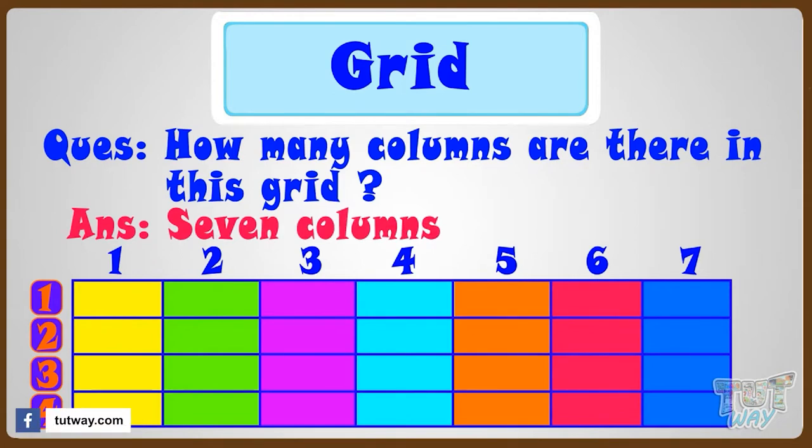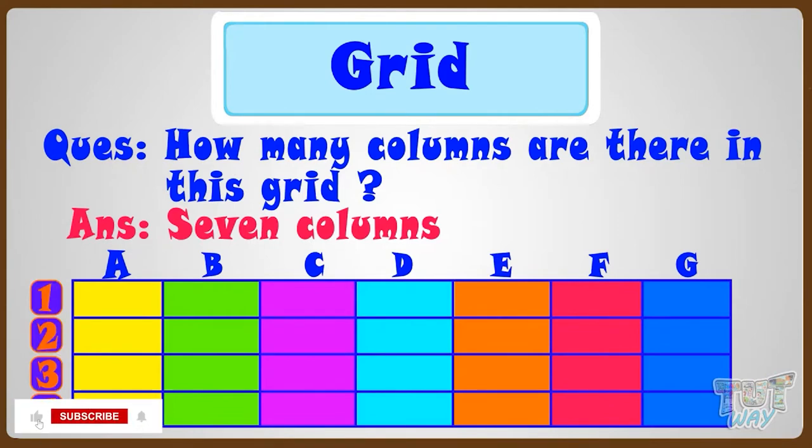Let's name the columns A, B, C, D, E, F, G. We have named the rows with numbers and we have named the columns with alphabets.